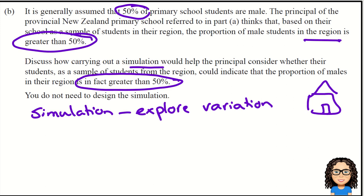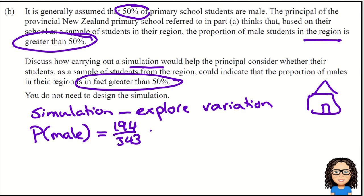By designing a simulation, that's going to allow us to see how much this estimate is likely to vary. Remember, we found that the probability of being male for this data — there were 194 males out of 343 — which as a decimal is 0.5656. So we want to know how much variation there is around that value. Does it vary anywhere between 40% and 60%, or is it going to be pretty accurate, maybe between 54% and 58%? That's what the simulation will tell us — an estimate of the variation in the data.